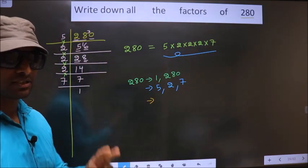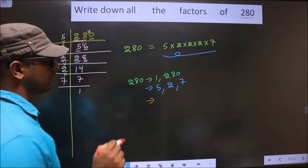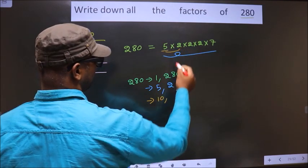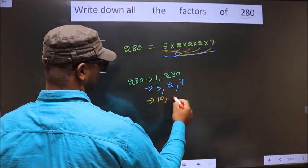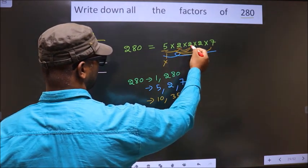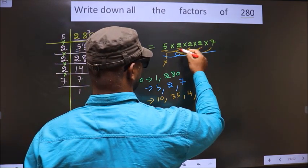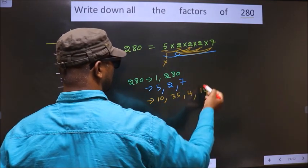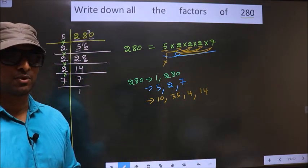Now you take a combination of 2 numbers. First I fix 5 and combine with 2 — I get 10. Combining 5 with 7 gives 5×7=35. Now leave 5 and take this 2, combine with the other 2 — we get 4. Combining 2 with 7 gives 14. Other combinations of two 2s give the same numbers, so no more combinations are possible.